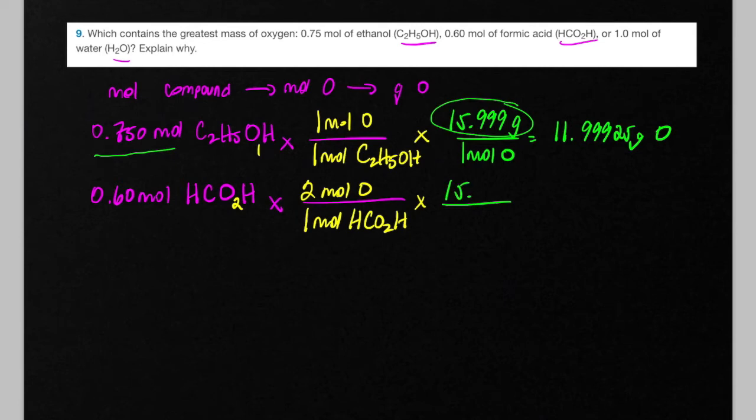And then we do the same thing again: we convert from moles of oxygen to grams of oxygen by multiplying by 15.999. So on my calculator, I'm going to enter 0.6 times 2 times 15.999, and I get 19.1988 grams of oxygen.